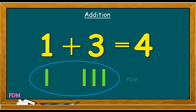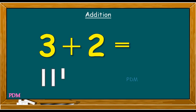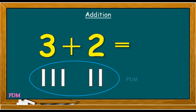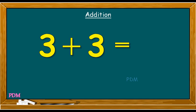Three plus two. The first set of lines stands for three and the second set of lines stands for two. When we add them both together, the sum comes one, two, three, four, five. Three plus two is equal to five.